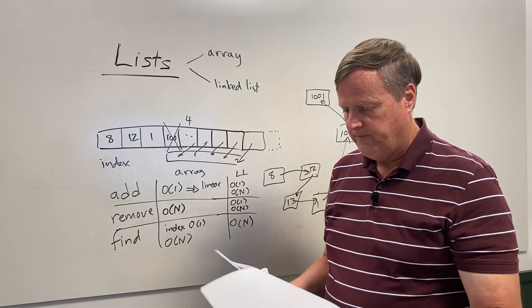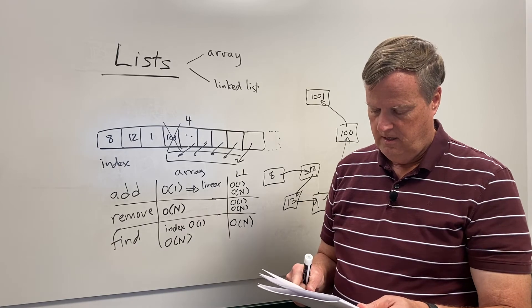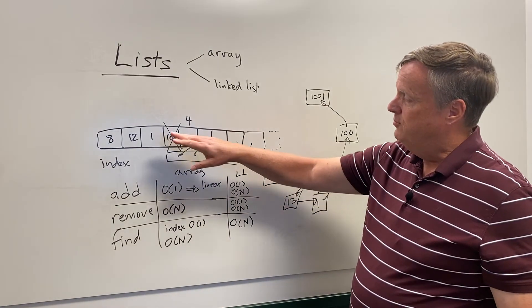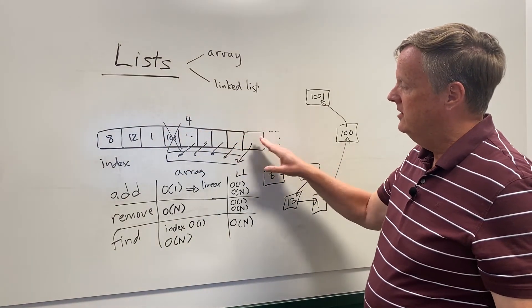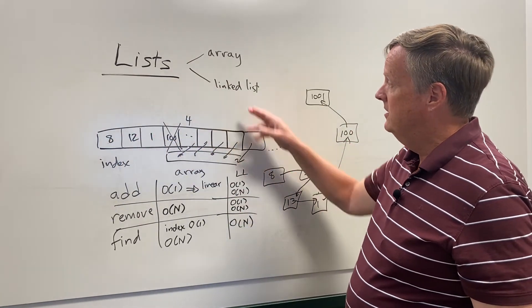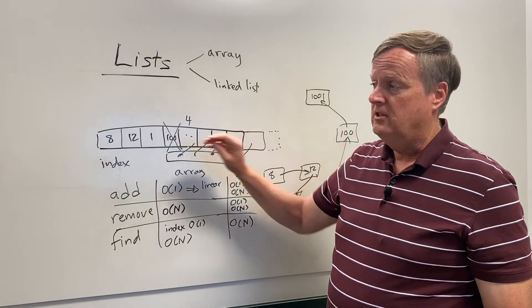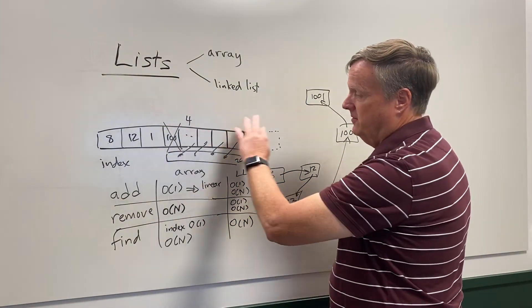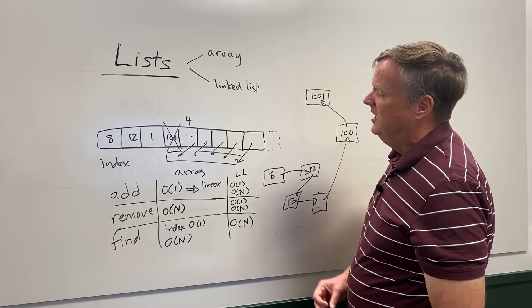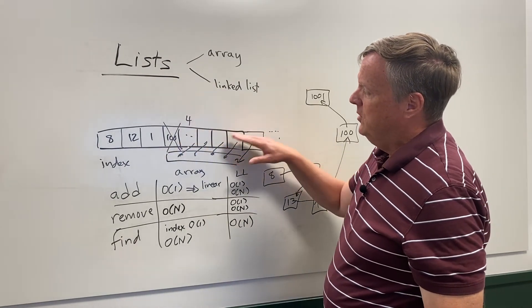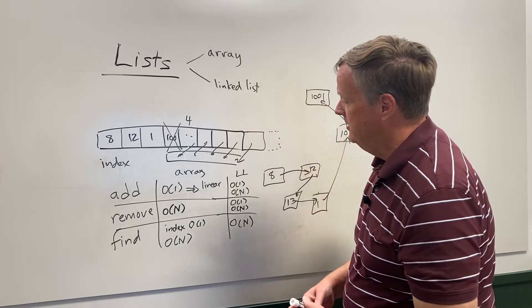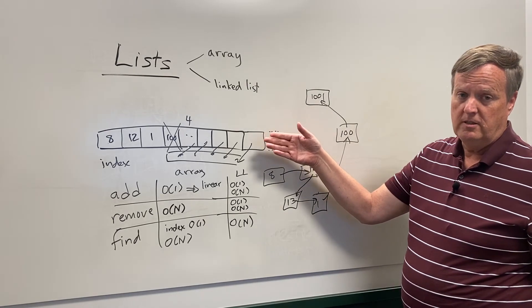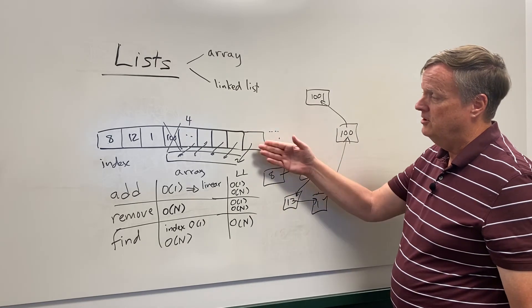One more thing about lists: if you put data in at the end, it stays in the order you inserted it — there's no natural ordering. If you need the data sorted, you have to swap elements around using a sorting algorithm. There are lots of sorting algorithms — some expensive, some fairly cheap. Typically, sort operations are built into language libraries so they're easy to use.